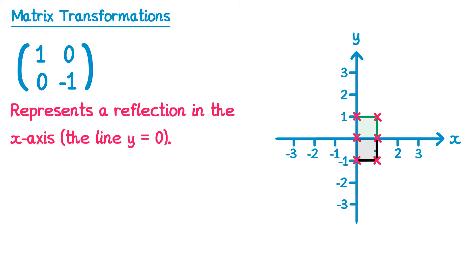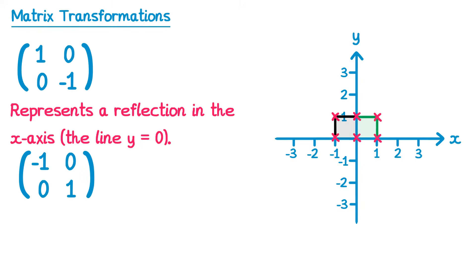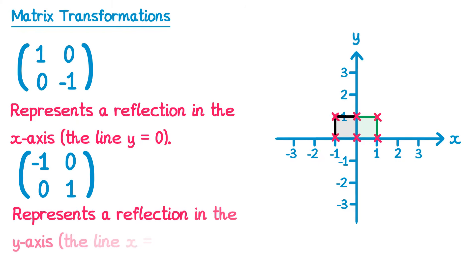There's a similar matrix for a reflection in the y-axis, or the line x equals 0. If those points were to map over to the other side, it would be under this matrix [-1 0; 0 1]. So this matrix represents a reflection in the y-axis, or the line x equals 0.